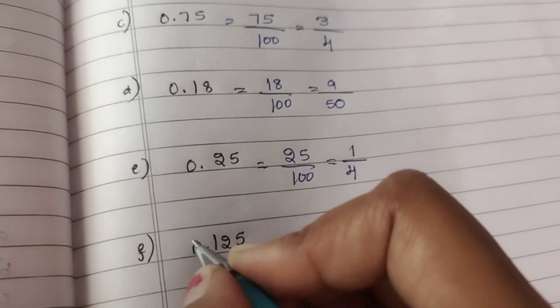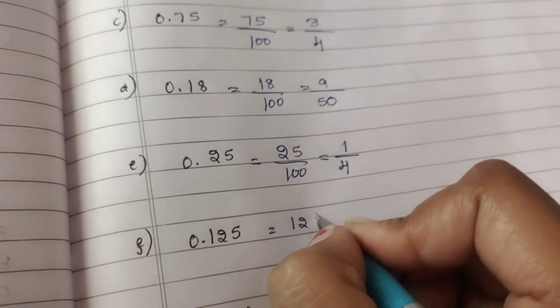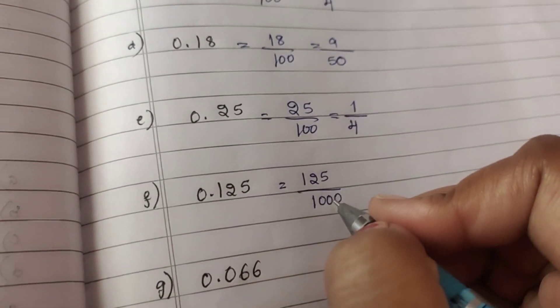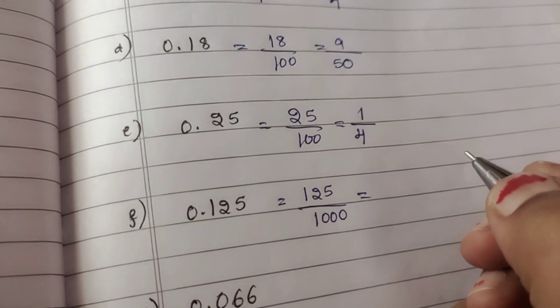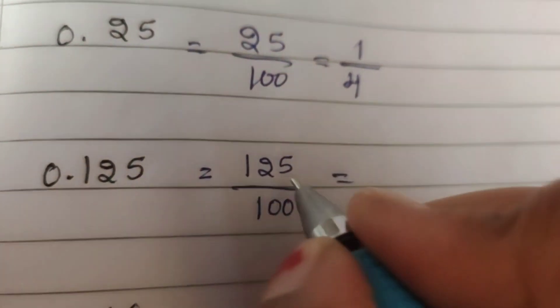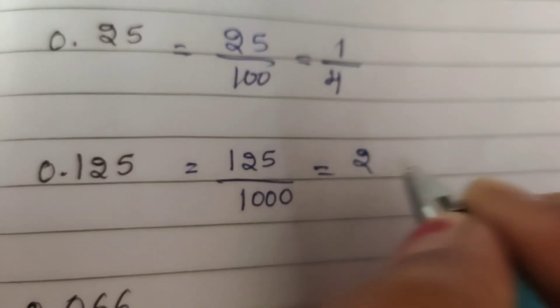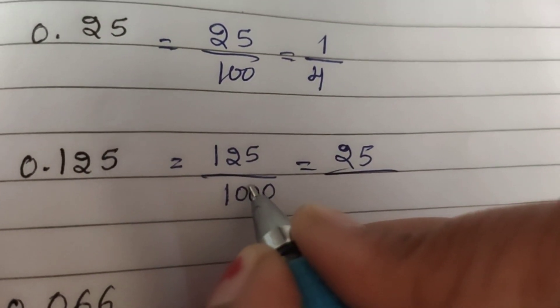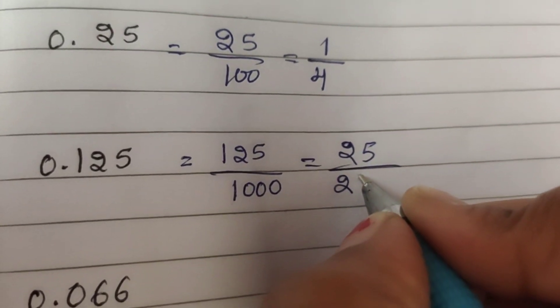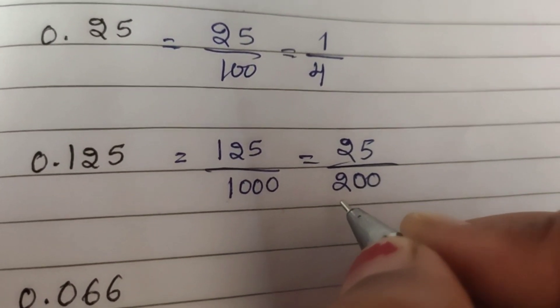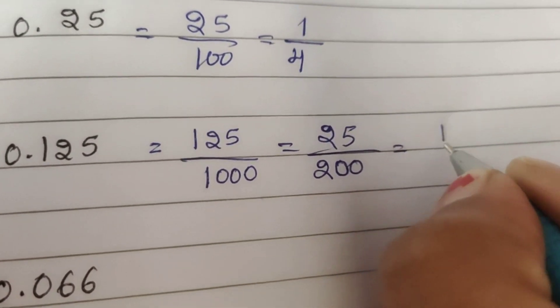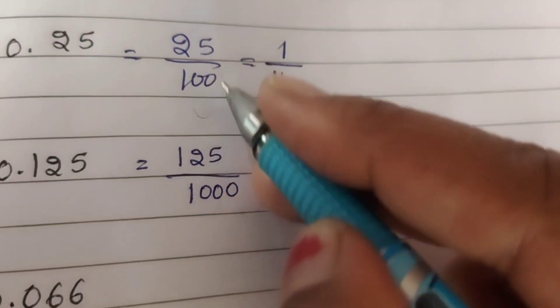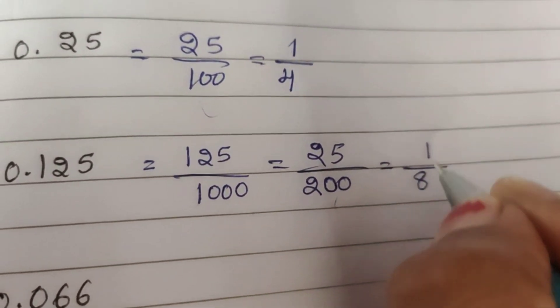This is 0.125 with 3 digits, so divide by 125 by 1000. First divide by 5: 5 twos are 10, 5 fives are 25, giving 25 by 200. Then again by 5, leaving 2 zeros, and it becomes 1 by 8. Next: 3 digits after the point, so 66 by 1000. Divide by 2: 2 threes are 6 giving 33 by 500.